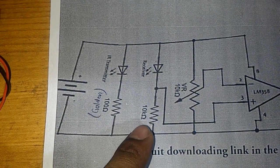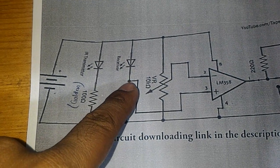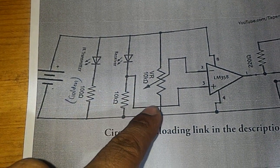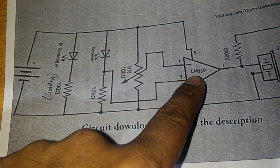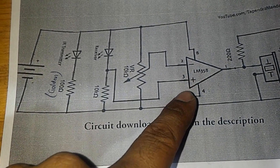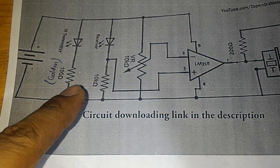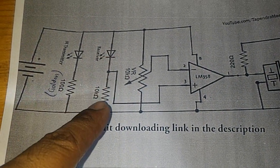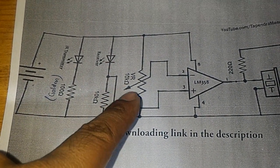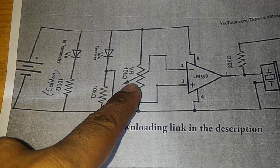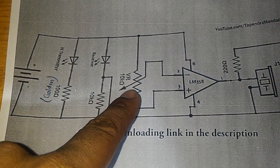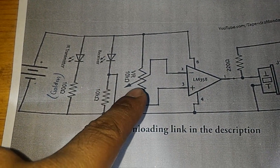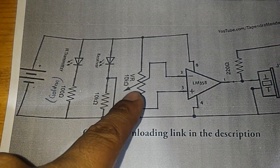The connection is given to a comparator LM358. Basically this is in a voltage divider configuration and this is a variable resistor of 10 kilo ohms. You can set the sensitivity or the range by setting this potentiometer.